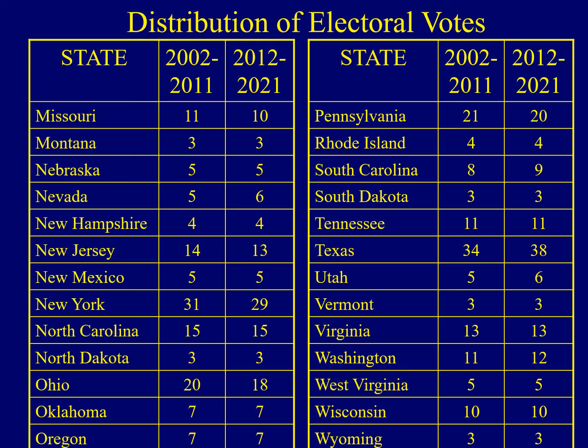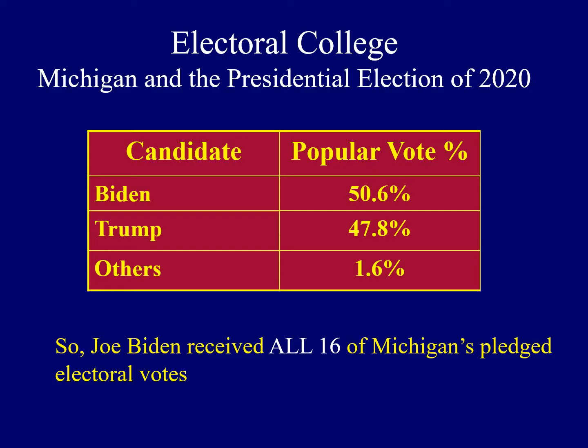Looking at other state comparisons: New York used to be the largest state in the Union and now has 29 electoral votes. Ohio has 18 electoral votes. Texas has seen more people moving in than any other state over the last 20 years or so, going from 34 to 38 electoral votes. All of this is based upon each state's population.